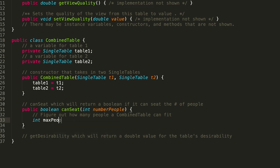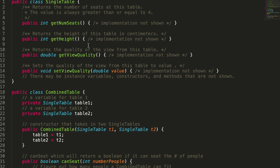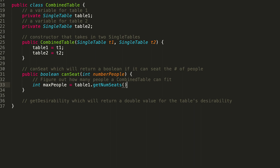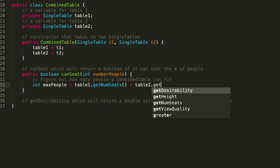We need to find the maximum number of people the combined table can fit. Looking at the single table class, getNumSeats looks like exactly what we need. So: int maxPeople = table1.getNumSeats() + table2.getNumSeats() - 2. That gives us the total capacity of the combined table.